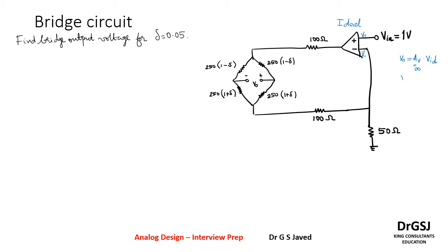So we get V_ID, which is V_plus minus V_minus, is equal to 0. This means V_plus equal to V_minus. This in an op-amp is called a virtual ground.